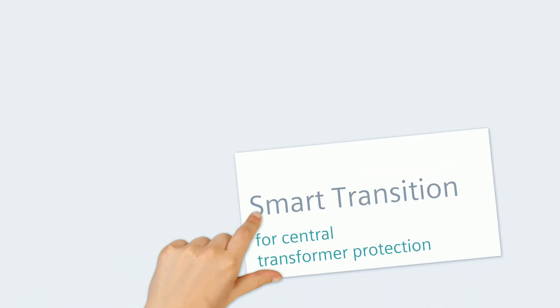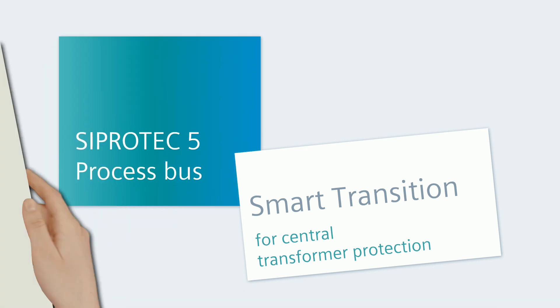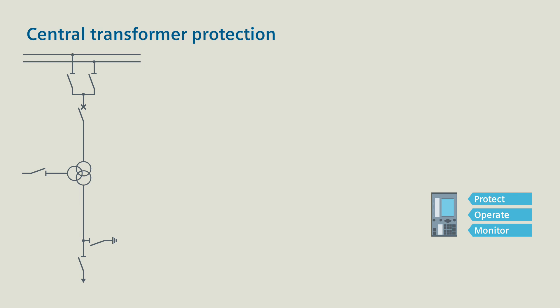Smart transition for central transformer protection. With the CProtek 5 process bus, it's quite easy. The initial situation is a three-winding transformer. One single CProtek 5 multifunction device performs all protection, operating and monitoring tasks, as well as all automation tasks.